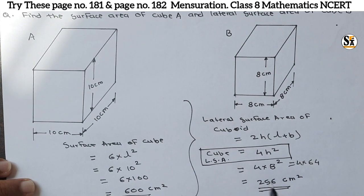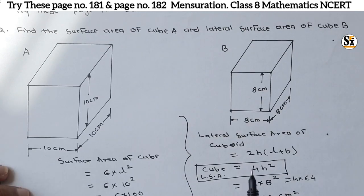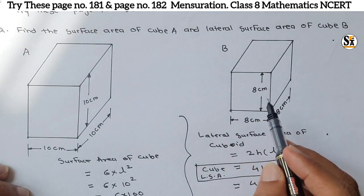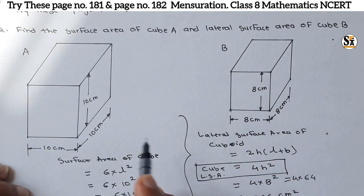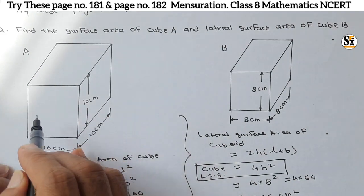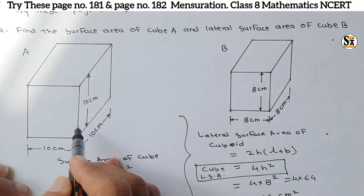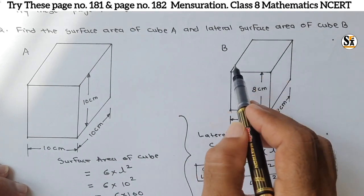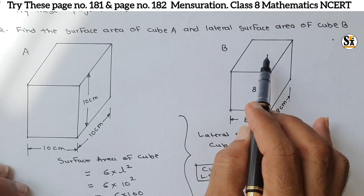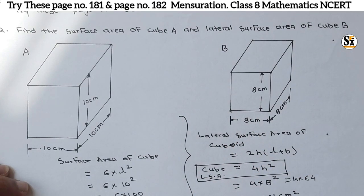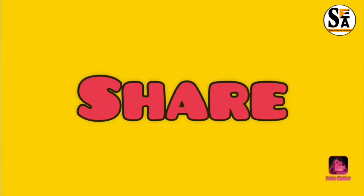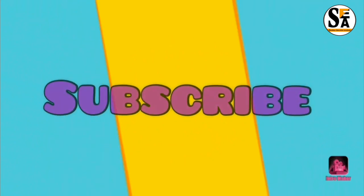The lateral surface area excludes the top and bottom faces. In total surface area we count all faces including top and bottom; for lateral surface area we do not count top and bottom. Therefore the lateral surface area of a cube is always less than its total surface area. That's all for this video — we will meet again in our next video. Do learn, do enjoy. Thank you.